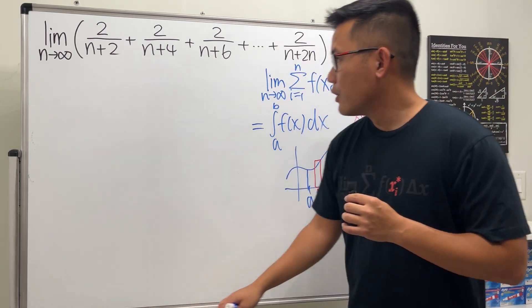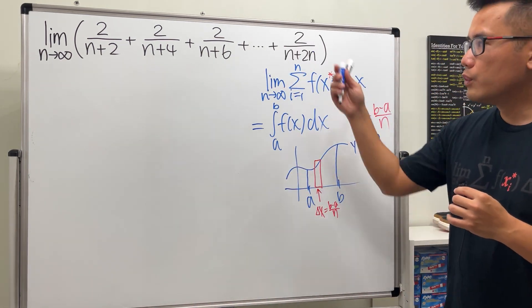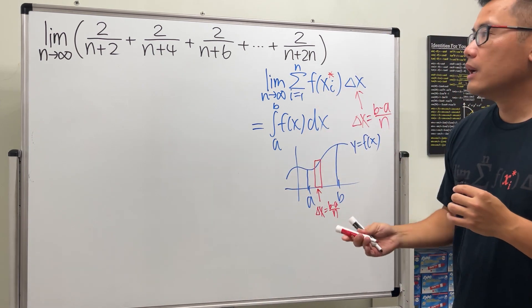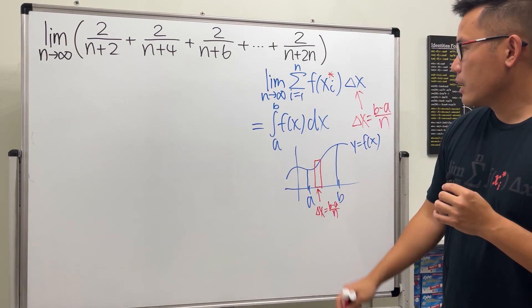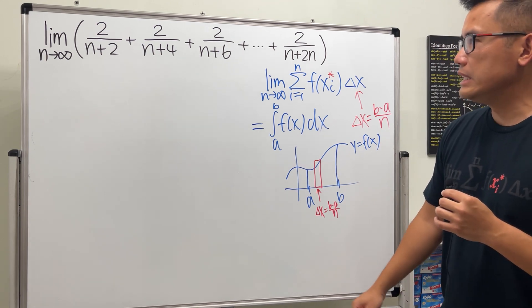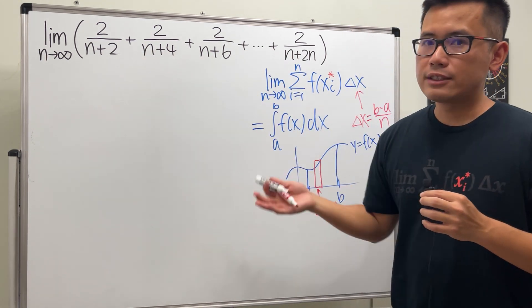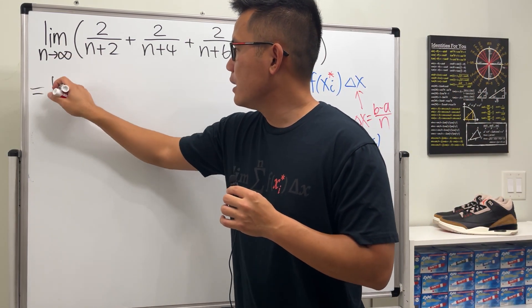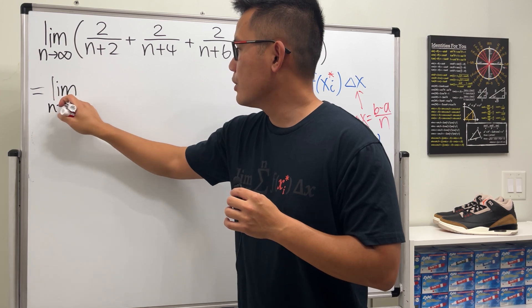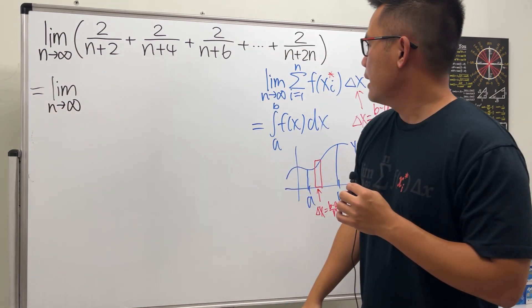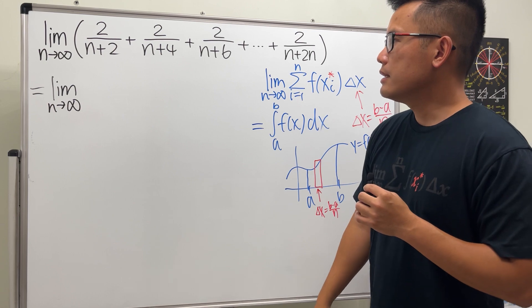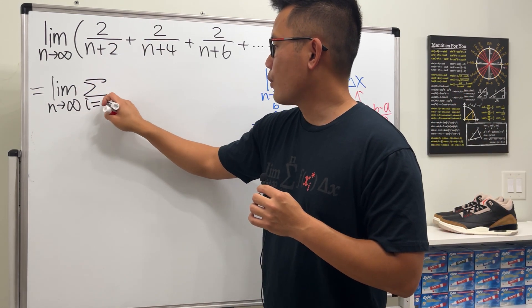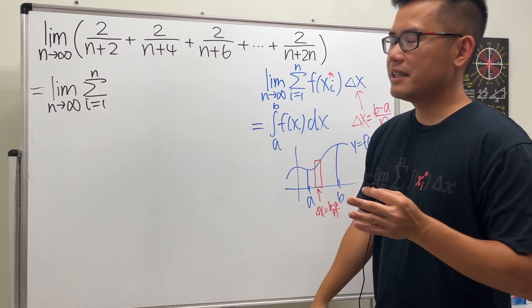So now, what we are going to do with this is that we will go back here and then rewrite it in terms of this form. We can see that they are just adding, that's why we can use the sigma for it. This is going to be the limit as n goes to infinity. And then we have the sigma, i goes from 1 to n. So far so good.